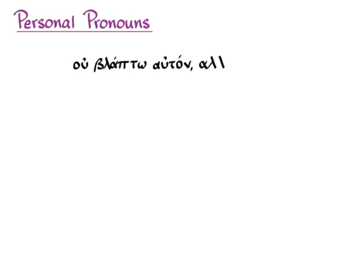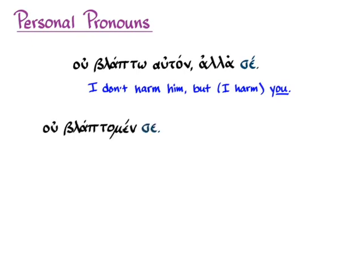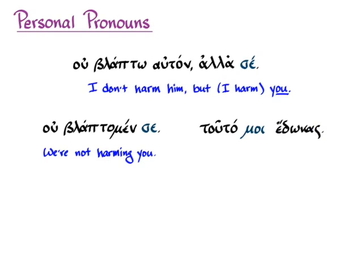Let's look at a few more examples to get used to the different ways we use pronouns, both emphatic and unemphatic. Ou blapto auton, alla se — with the accented emphatic se — means 'I don't harm him, but I harm you,' pointing with emphasis to the person actually affected. By contrast, ou blapto men se with the enclitic unaccented se simply means 'we're not harming you' — not emphatic, just stating the action. And tuto moi edokas simply means 'you gave me this' — nothing stressing that it was I you gave it to, just 'you gave this to me.'